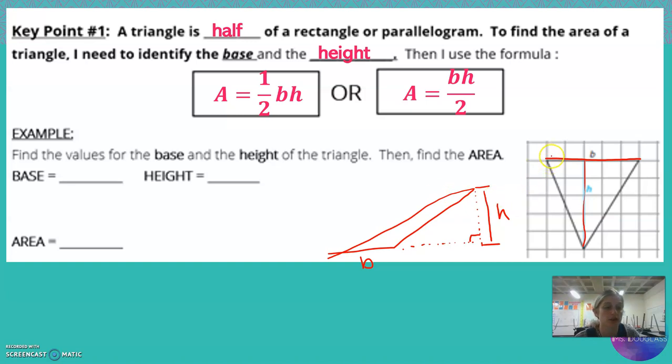So let's use this example over here. My base is 1, 2, 3, 4, 5. I'm going to write that in. That's my base. My height is 1, 2, 3, 4. Oh, also 5.